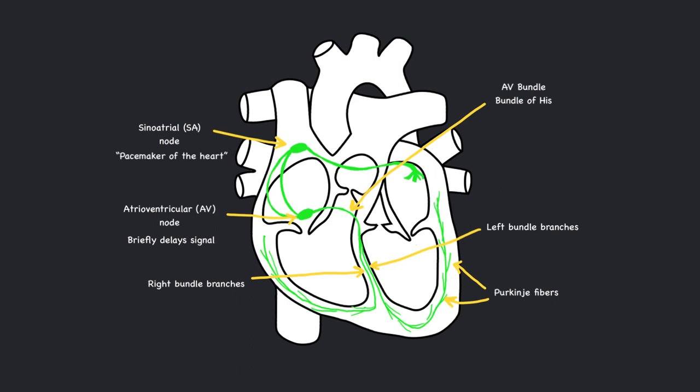This pushes the blood towards the semilunar valves. On the right side of the heart, this is going to push blood through the pulmonary semilunar valve into the pulmonary trunk. Eventually, that blood will go to the lungs to be oxygenated. On the left side of the heart, it will push it through the aortic semilunar valve into the aorta and then to the rest of the body.